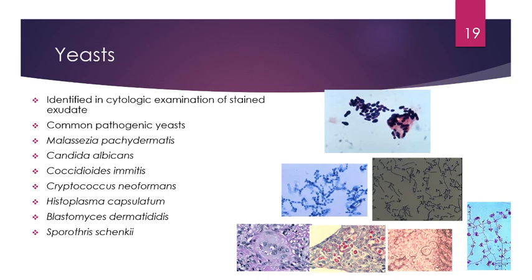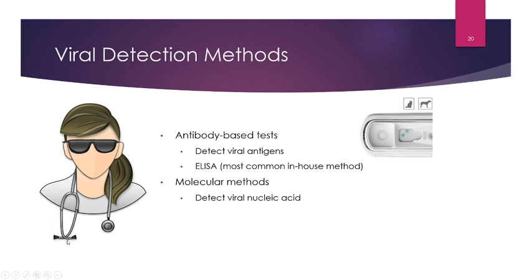Microscopic examination of fungi includes yeasts such as Malassezia, which looks like a peanut or snowman and is commonly found in ears or vaginal cavities — Malassezia pachydermatis is very common. Other fungi include Candida albicans, Coccidioides immitis, Cryptococcus neoformans, Histoplasma capsulatum, Blastomyces dermatitidis, and Sporothrix schenckii. Histoplasma and Blastomyces are becoming increasingly common in this area.